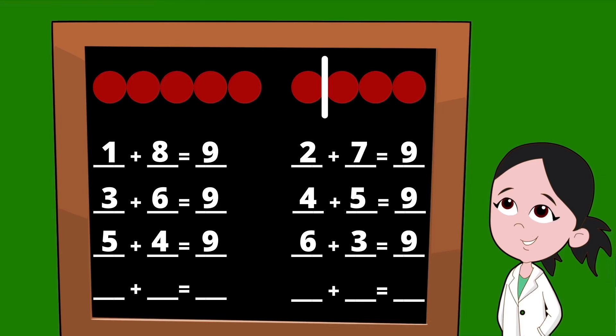Let's go ahead and slide that line over again. This time, when we count the dots on the left of our line, we come up with seven, so we're going to start this set of partners with the number seven. To the right of our line, we have just two dots, so our second partner is the number two. Seven plus two equals nine.